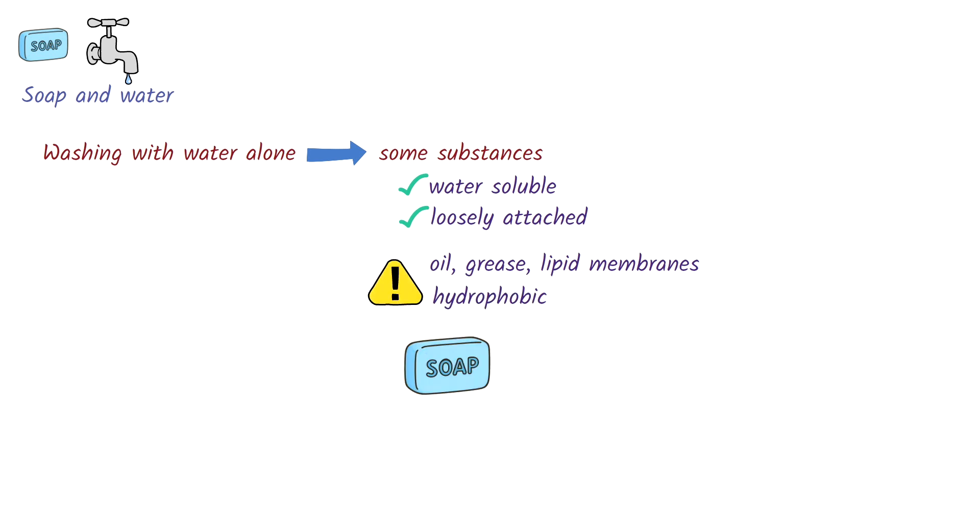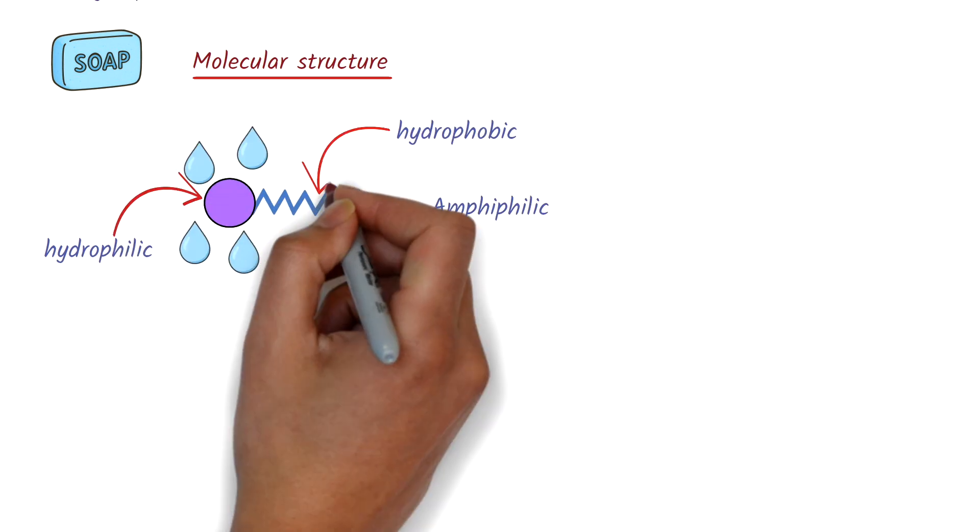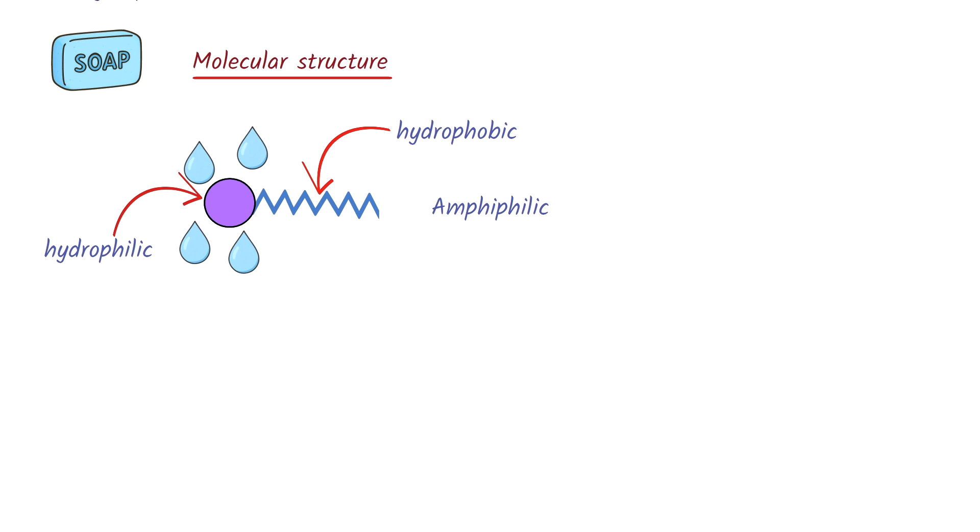That's where soap comes in. The key to the effectiveness of soap is its molecular structure. Soap molecules are amphiphilic. They have two different ends. One end is hydrophilic or water-loving, while the other is hydrophobic or water-fearing. The hydrophobic tail binds to oils, fats, and the lipid layers of some microorganisms.